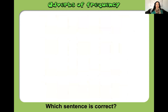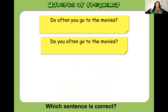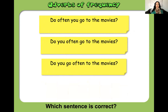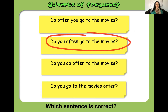Which sentence is correct? 'Do often you go to the movies?', 'Do you often go to the movies?', 'Do you go often to the movies?', or 'Do you go to the movies often?' Let's see how smart you are. The answer is 'Do you often go to the movies?' Congratulations if you got it.